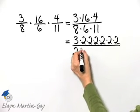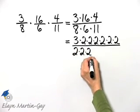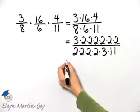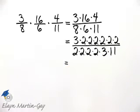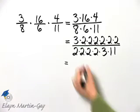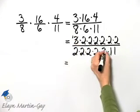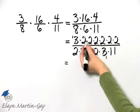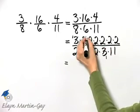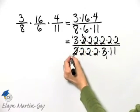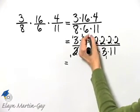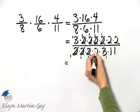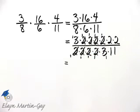Eight is two times two times two, and six is two times three, and then I have eleven. Now I can see every single common factor. There is obviously a common factor of three, and then how many common factors of two do we have? I've got four down here and six up there, so I know I have a common factor once, twice, three times — and four times two is a common factor.